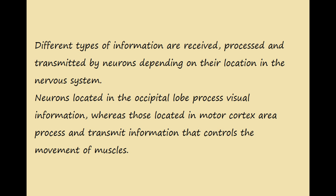Different types of information are received, processed, and transmitted by neurons depending on their location in the nervous system. For example, neurons located in the occipital lobe process visual information, whereas those located in the motor cortex process and transmit information that controls the movement of muscles. So neurons have specific functions based on their location.